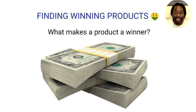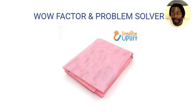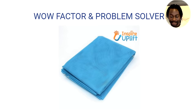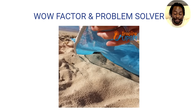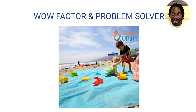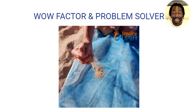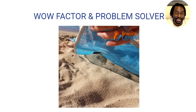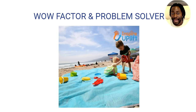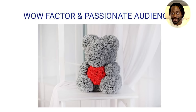First we're going to go over finding winning products. What makes a product a winner? A winning product must have that wow factor and be a problem solver. For example, here's a sandproof beach mat — no sand gets on top of the mat, causing dirt on your shoes or your stuff at the beach. It has that wow factor because when a customer sees it, they're like, 'what do you mean by sandproof mat?' It peaks their curiosity. But it's not all about problem solving — if it has a wow factor and a passionate audience, it'll also work very well because people buy based off emotion.